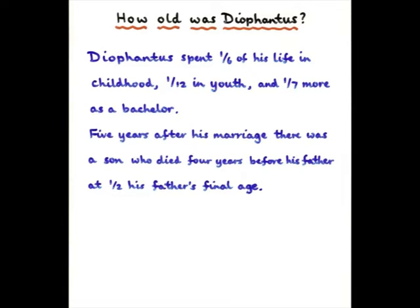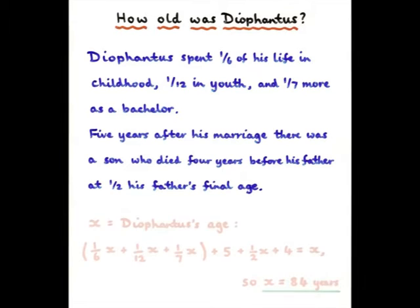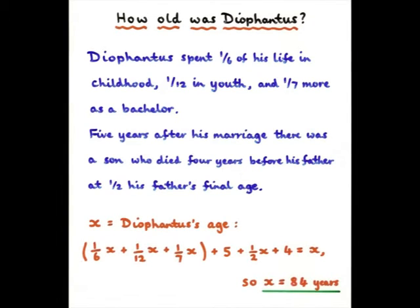Although they wouldn't have used the algebraic notation that we use now, we can simply answer this question by letting X be the age. If you interpret all this, it's just this equation here, which you can solve to give that X is 84. Diophantus died at the age of 84, quite an advanced age at the time.